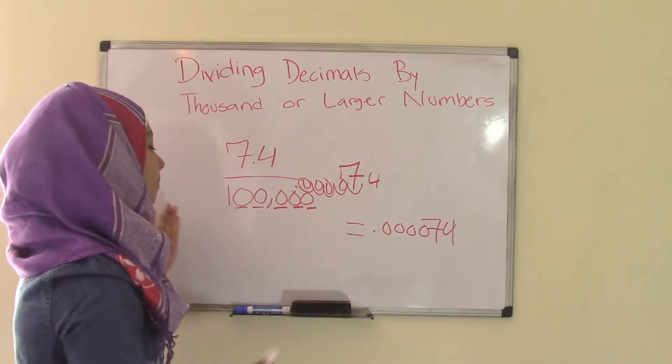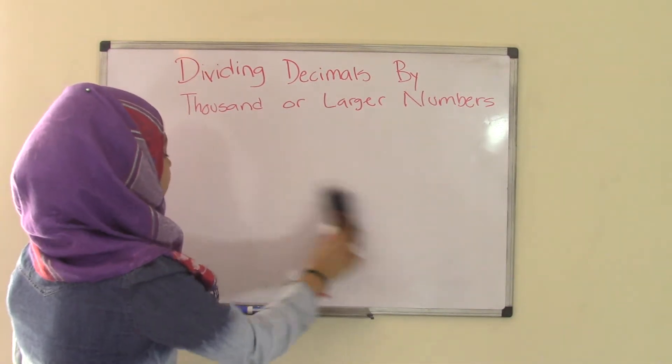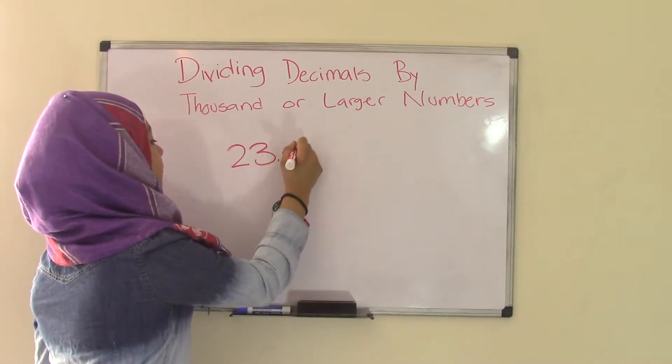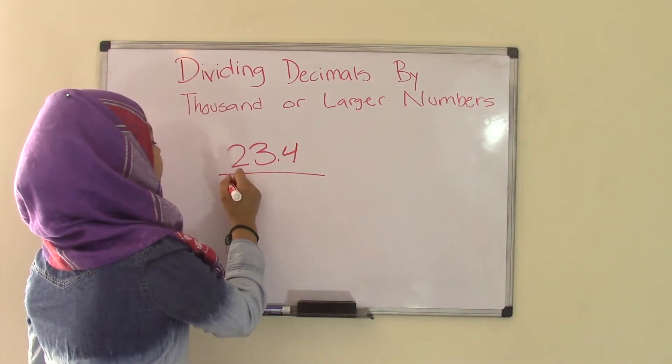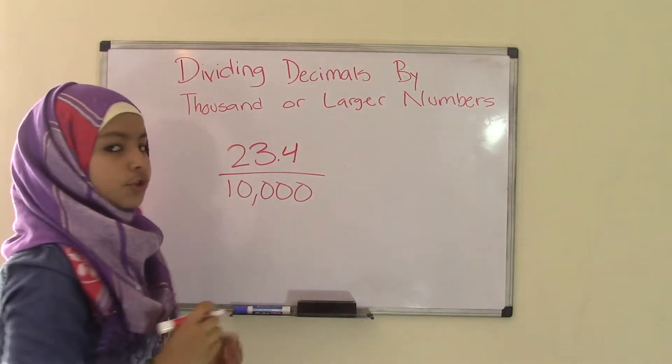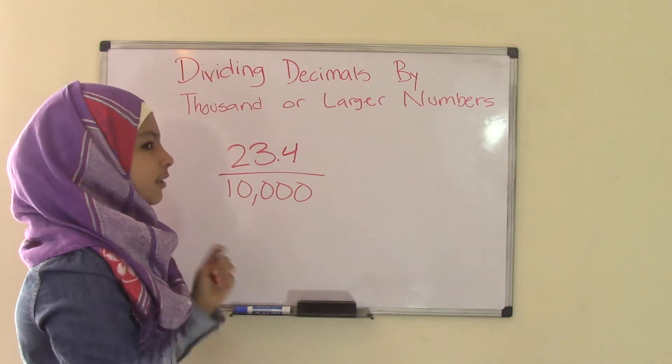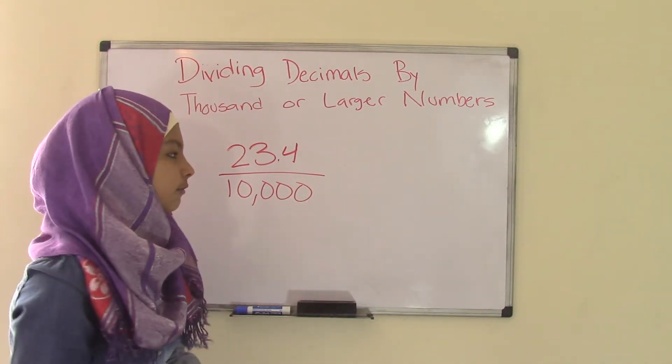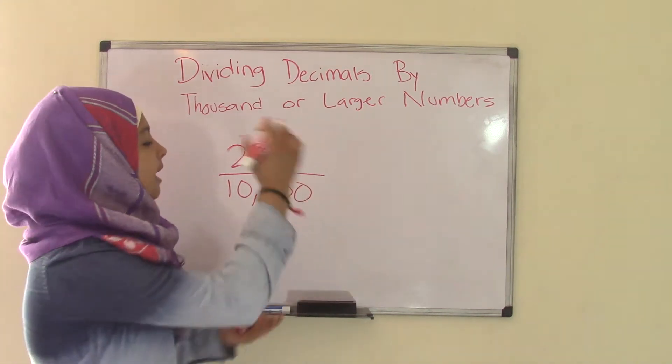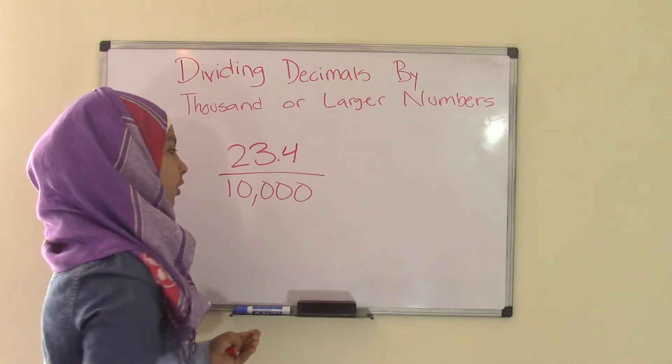Now how about we try a decimal number like maybe 23.4 divided by 10,000. Now don't get yourself confused with the decimal number. There's a difference between 7.4 and 23.4. 7.4 is obviously smaller, it holds less value. 23.4 is a bigger number. But that does not change the method that you're going to use.